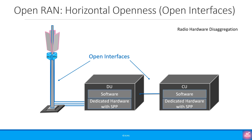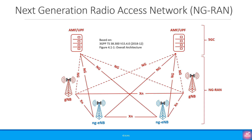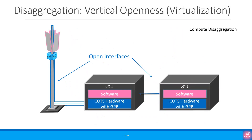When we talk about Open RAN for the decomposed architecture, we refer to open interfaces between the CU and DU as well as the DU and the RU. It is worth highlighting that in the 5G non-standalone architecture, the X2 interface should be open and completely based on 3GPP. In the case of 5G, the same applies for the XN interface for the next generation RAN. We also have compute disaggregation or vertical openness, using COTS hardware for the CU and DU software.